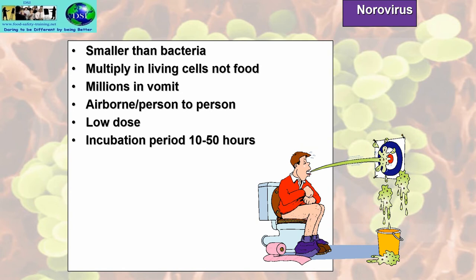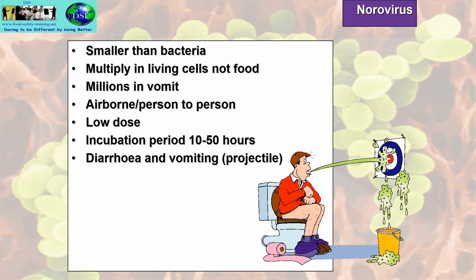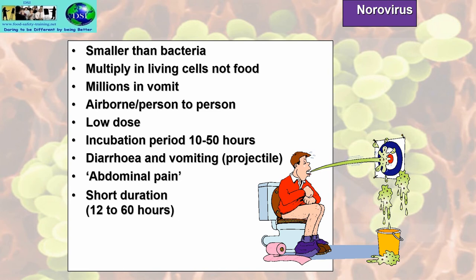The incubation period for norovirus is 10 to 50 hours. Diarrhoea and vomiting are very common — projectile vomiting occurs, and you get a lot of abdominal pain. The duration of illness is only 12 to 60 hours, compared to 1–7 days for bacterial food poisoning. Rotavirus is another type of virus with similar effects.